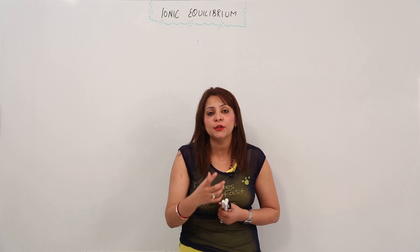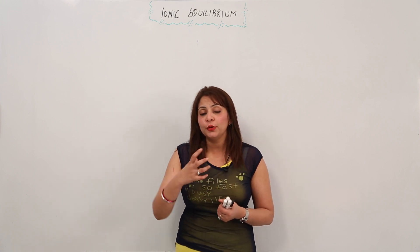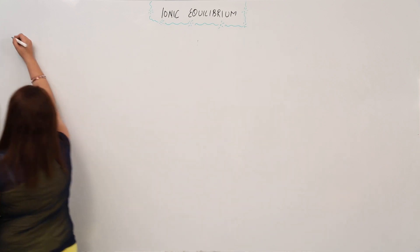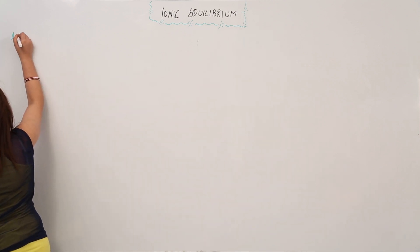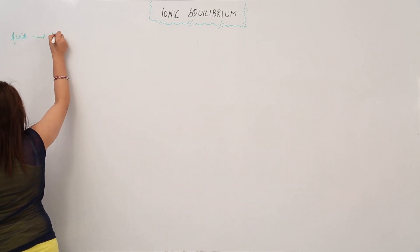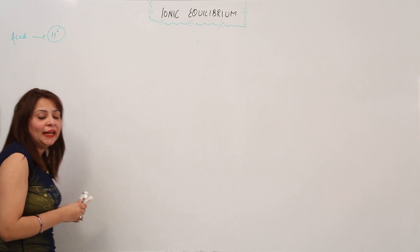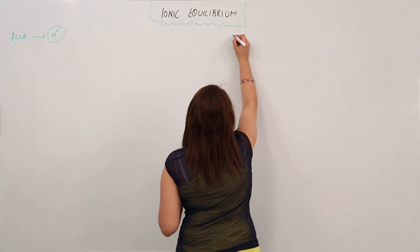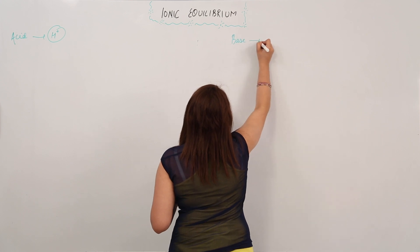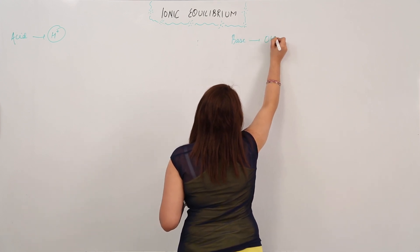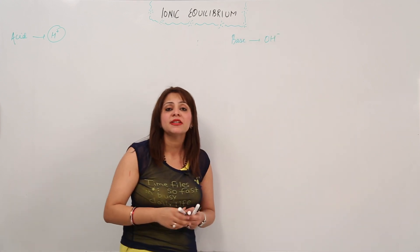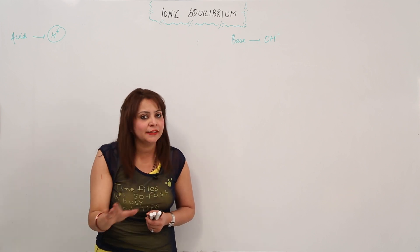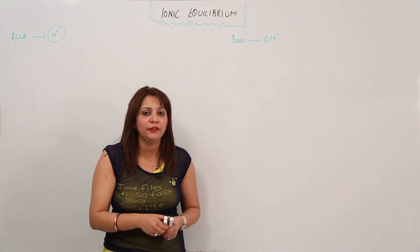I want you to know what is actually considered an acid. Any substance which, when dissolved in water, produces hydrogen ions is called an acid. Similarly, a base is that which dissociates in water to give hydroxide ions. It is clear to you from the previous topic we have done.